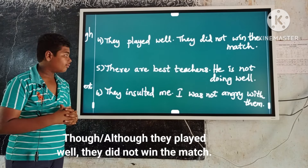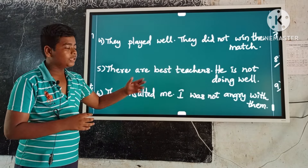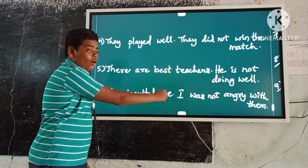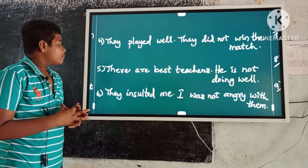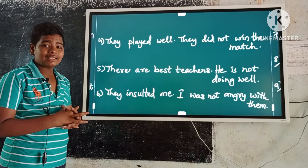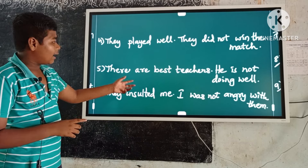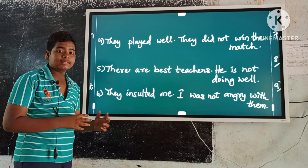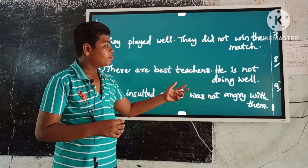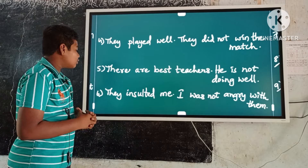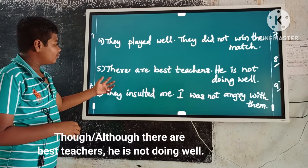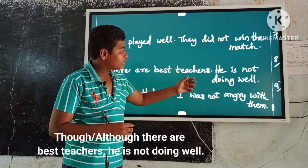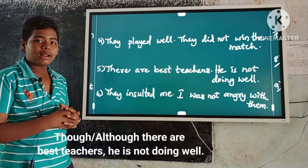Example number five: There are best teachers. He is not doing well. These are contrast ideas. Here the first occurring sentence is 'there are best teachers.' Keep though or although before it, and a comma before the second sentence. So the answer is: Though there are best teachers, he is not doing well.